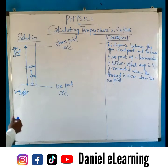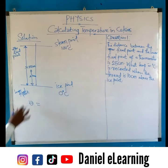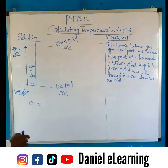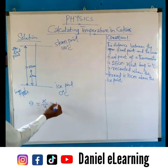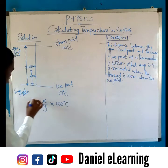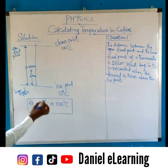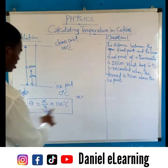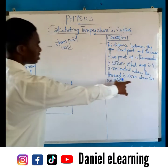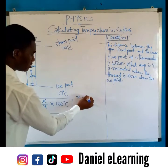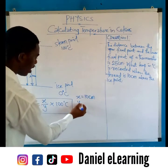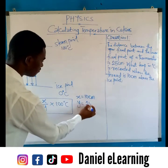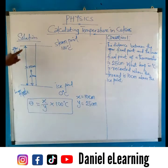Let's see the formula. The formula for solving this is: Theta is equal to X over Y, multiplied by 100°C. This is what we are going to use. Extracting all our parameters: X stands for the 10CM, and Y stands for the 25CM.